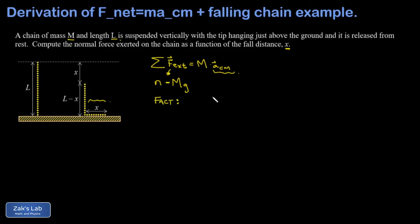A useful physical fact: the part of the chain still falling is in free fall, so its acceleration has magnitude g. Some may know this is really just a first approximation - in the lab the end of the chain actually accelerates slightly faster than g due to the links below pulling on it. But that goes beyond the scope of introductory physics, so we use the approximation that the falling part is in free fall at about 9.8 m/s².